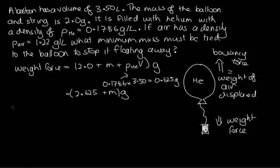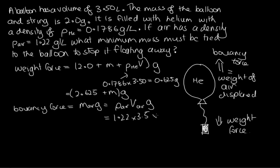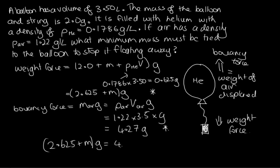The buoyancy force equals the weight of air displaced: density of air times volume times g, which is 1.22 times 3.5 times g, giving 4.27g. Setting buoyancy force equal to weight force: (2.625 + M) times g equals 4.27g. The g's cancel, so M equals 4.27 minus 2.625, giving 1.65 grams as the minimum mass that must be tied to the balloon.